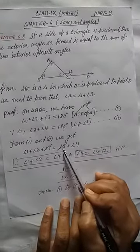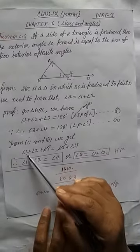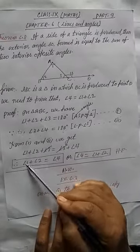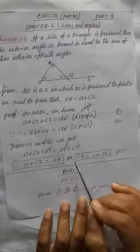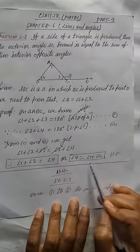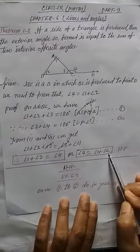Now, after canceling, what is remaining? So we can write angle 1 plus angle 2 is equal to angle 4, or we can write angle 4 is equal to angle 1 plus angle 2. Hence proved.